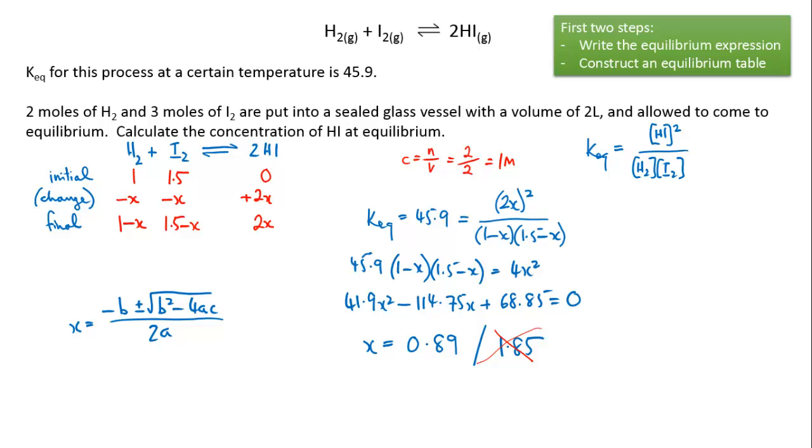We can now answer the question that we were asked, which was to calculate the concentration of hydrogen iodide at equilibrium. We know from our table that the concentration of hydrogen iodide was 2x. We know that x is 0.89, therefore concentration of hydrogen iodide equals 2 times 0.89 which equals 1.78 molar.